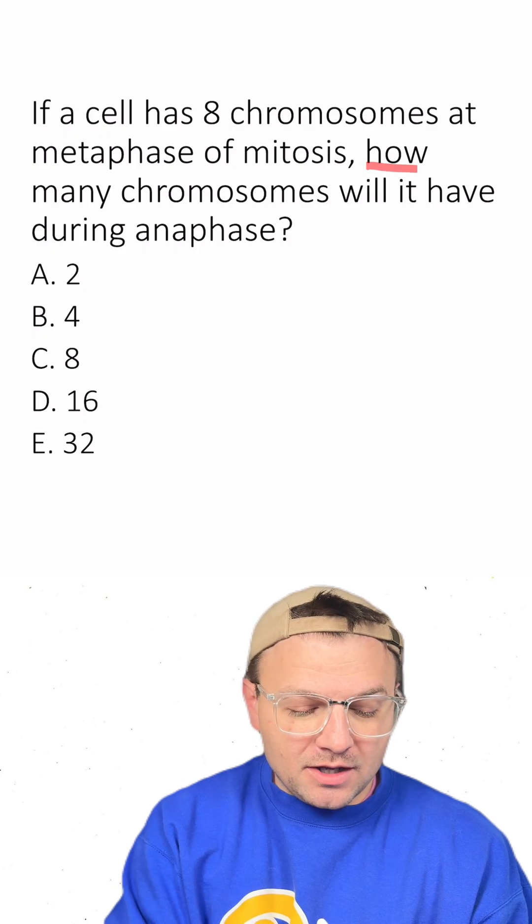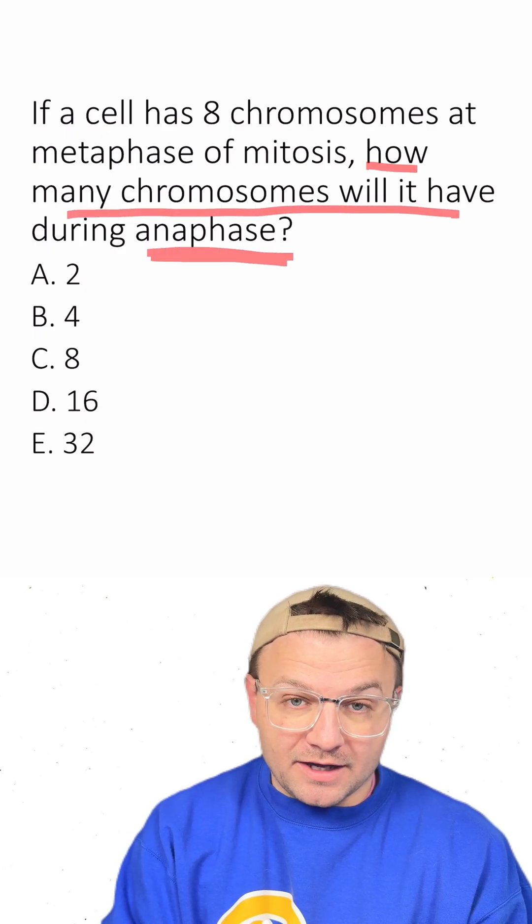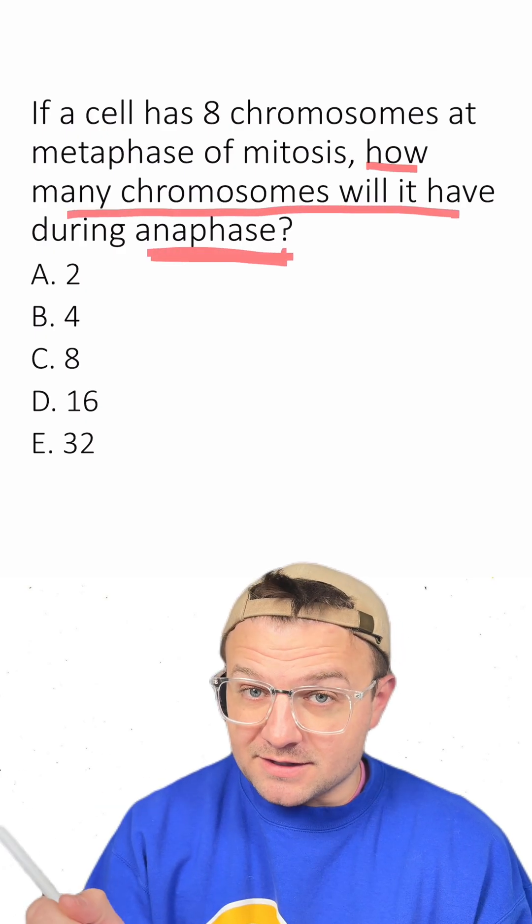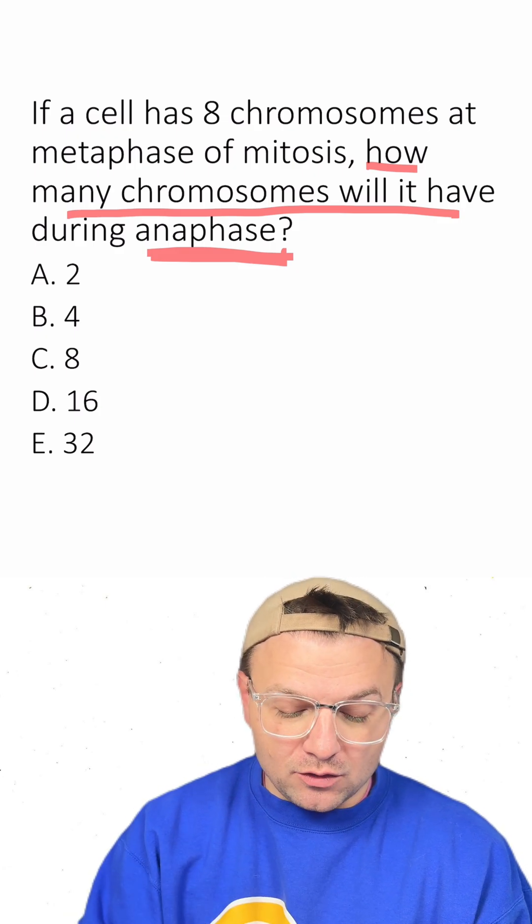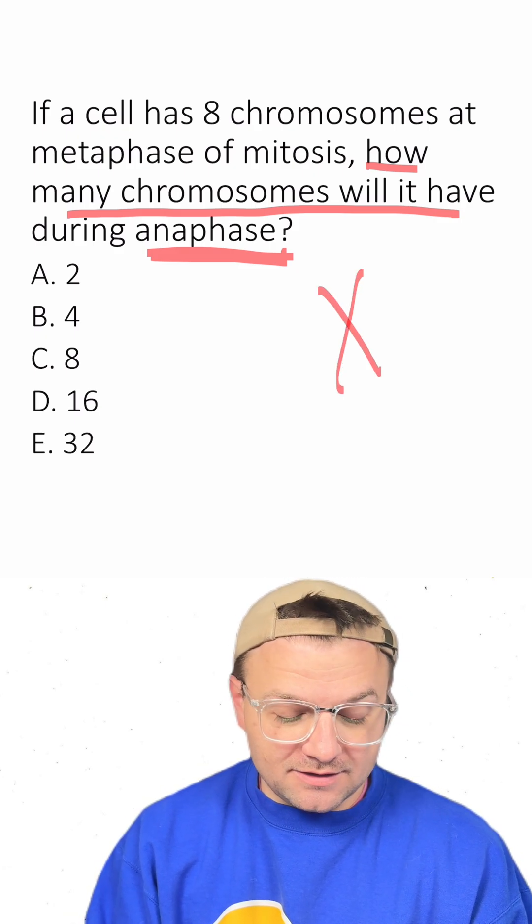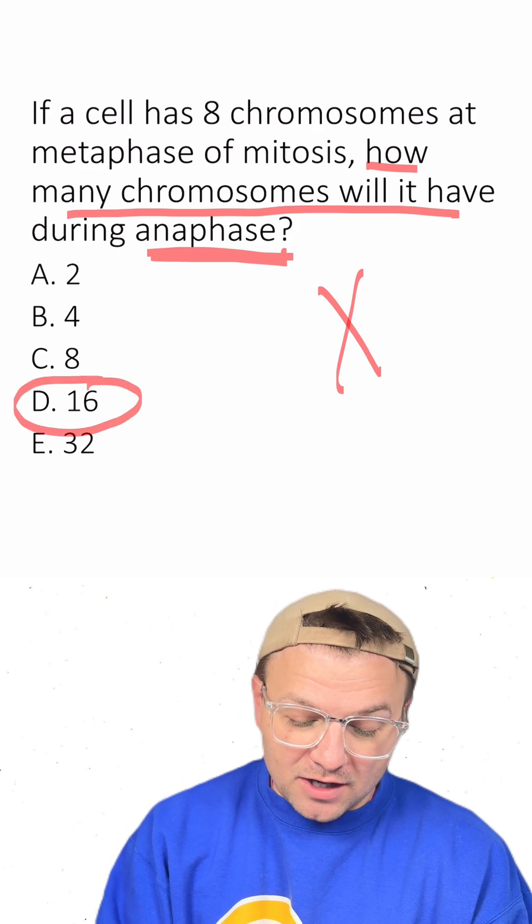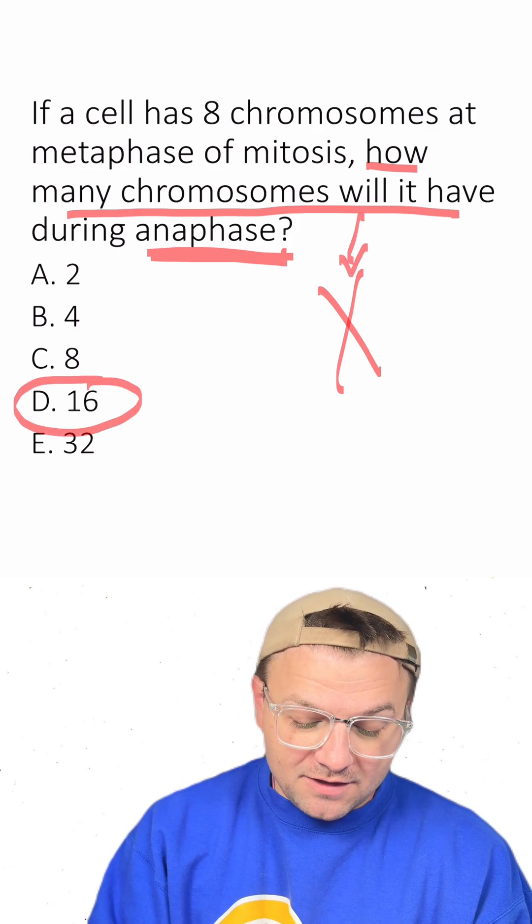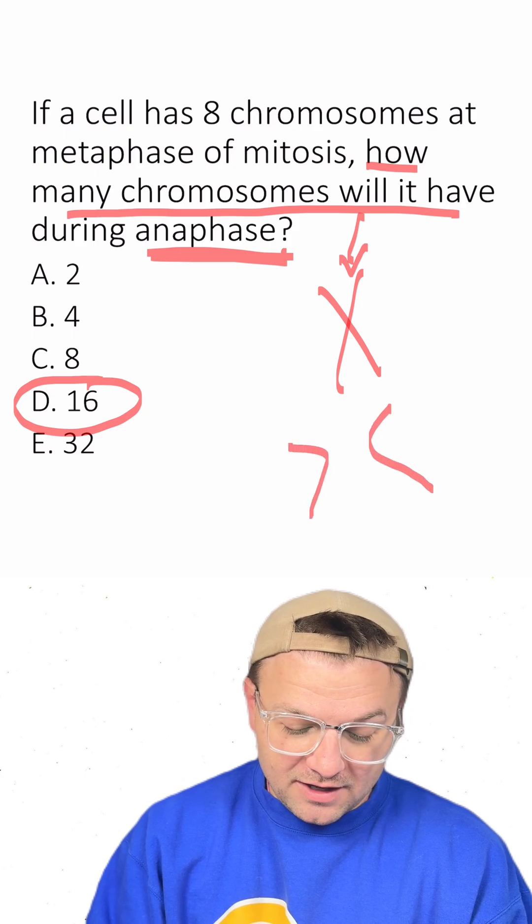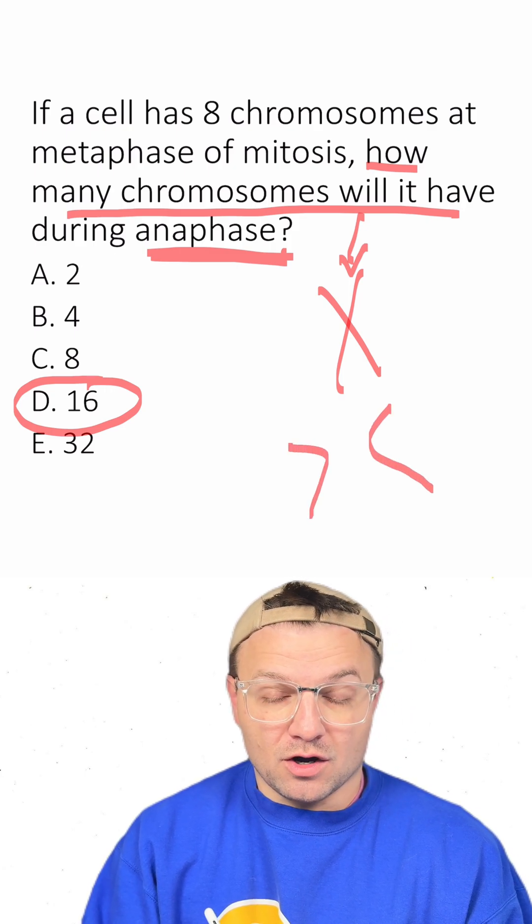Now, the question is asking how many chromosomes will it have during anaphase. So again, we haven't split the cell yet. We've just split the chromosomes that look like this. So the answer here is going to be 16. Since there's not going to be 16 of these, there's going to be 16 of these chromosomes with individual chromatids.